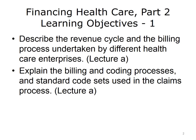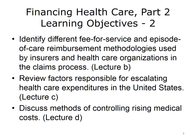The objectives for Financing Healthcare Part 2 are to: describe the revenue cycle and the billing process undertaken by different healthcare enterprises; explain the billing and coding processes and standard code sets used in the claims process; identify different fee-for-service and episode-of-care reimbursement methodologies; review factors responsible for escalating healthcare expenditures in the U.S.; and discuss methods of controlling rising medical costs.